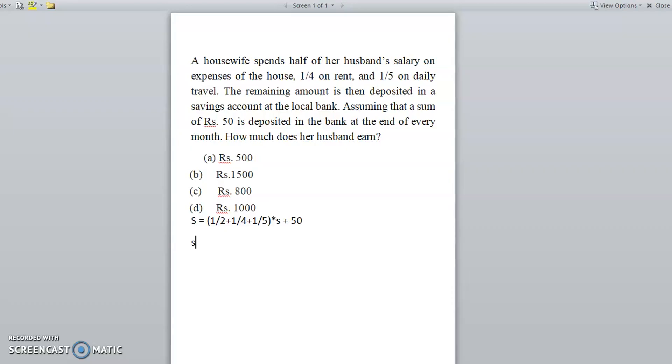Now we have to find out the LCM of the denominators. So what is the total salary? We are taking 20 as the LCM. So if we take 20 as the LCM, first fraction, 2 into 10, so 10. Plus next one, 4 into 5 is 20, so 5. Plus next one, 5 into 4, so 4.